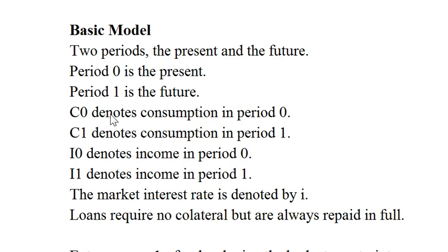C0 denotes consumption in period zero. C1 denotes consumption in period one. I0 denotes income in period zero. I1 denotes income in period one.